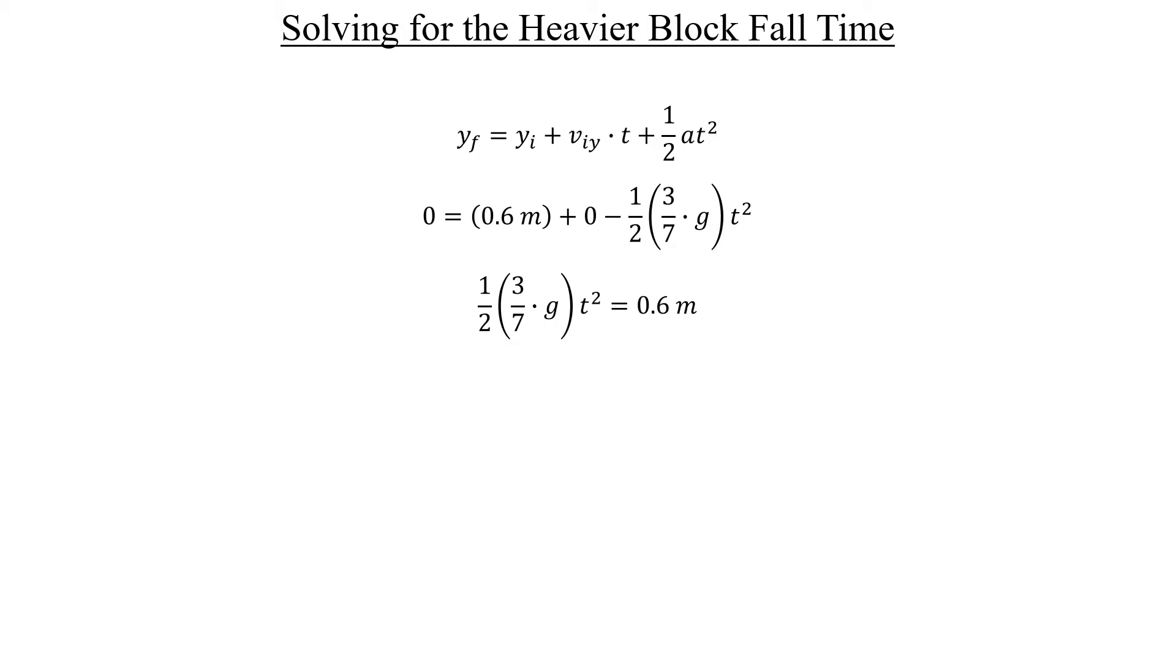And the idea is now we're going to do a little bit of algebra and try to solve for the time. And that's pretty easy. Here in this step, we can multiply both sides by 2, and then divide both sides by the expression for our acceleration. And with that, we're free to take the square root of both sides. Just be sure to plug in 9.8 meters per second squared for g, like this. And your calculator should say something similar to this. So the heavier block fell for just over half a second.